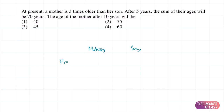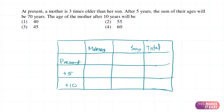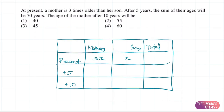Let's make a table and fill it as much as possible. The first sentence says that at present a mother is three times older than her son, so if the son's age is x, the mother's age is 3x. The second statement says that after five years the sum of their ages will be 70 years. So after five years, the mother's age will be 3x plus 5.